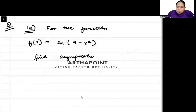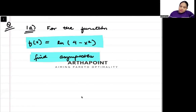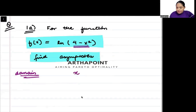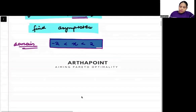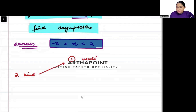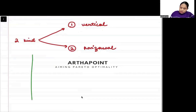Okay, let's look at the next type of question. What we want to do is find the asymptotes of this function. We know already that the domain of this function is whenever x belongs between minus 2 to 2. I want to find the asymptote of this function. There are two kinds of asymptotes: number one is called a vertical asymptote, and number two is called a horizontal asymptote.